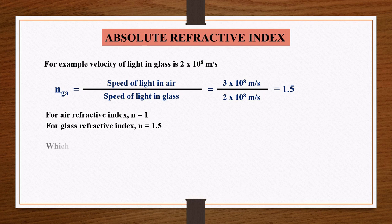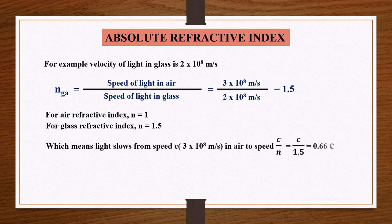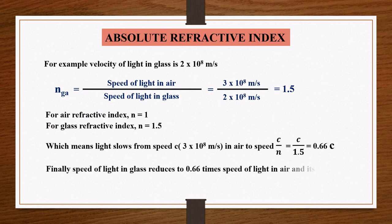For glass, refractive index n is equal to 1.5, which means light slows from speed c in air to speed c divided by n, that is c divided by 1.5, which equals 0.66c. Finally, the speed of light in glass reduces to 0.66 times the speed of light in air, and its value is 2×10⁸ meters per second.